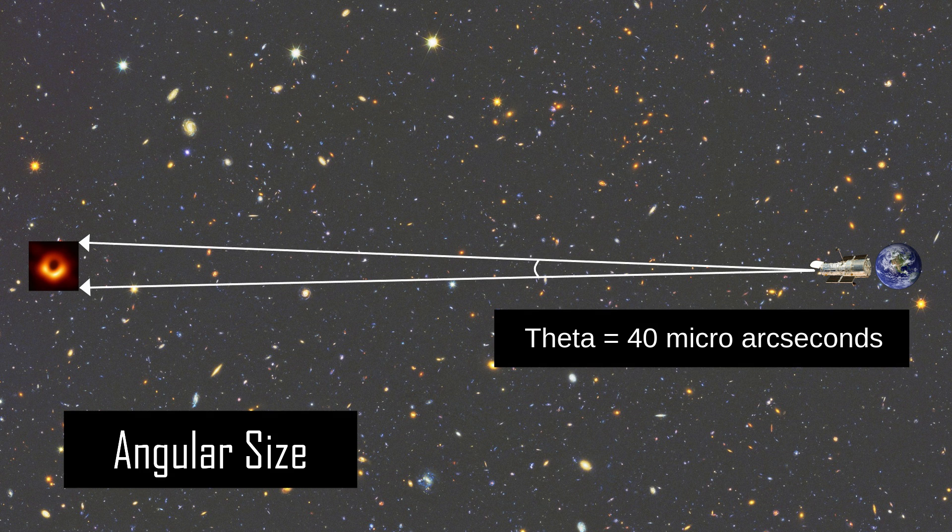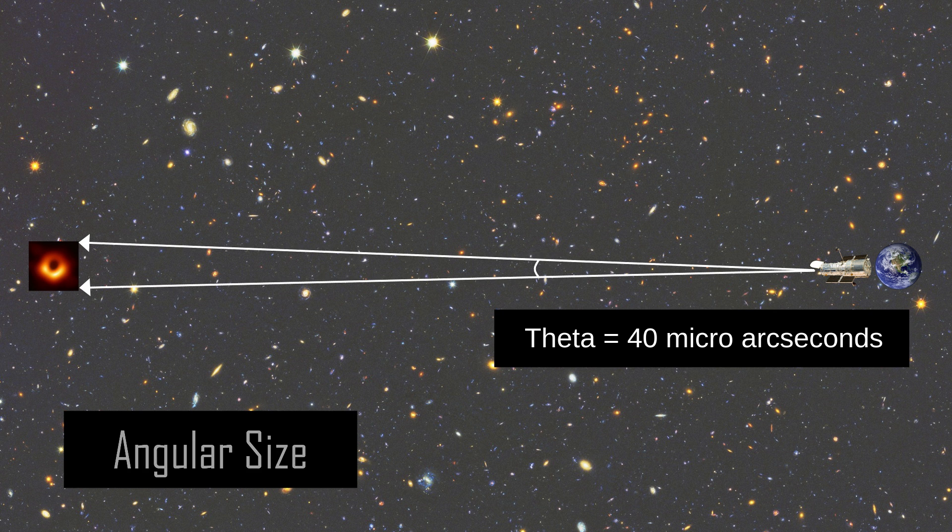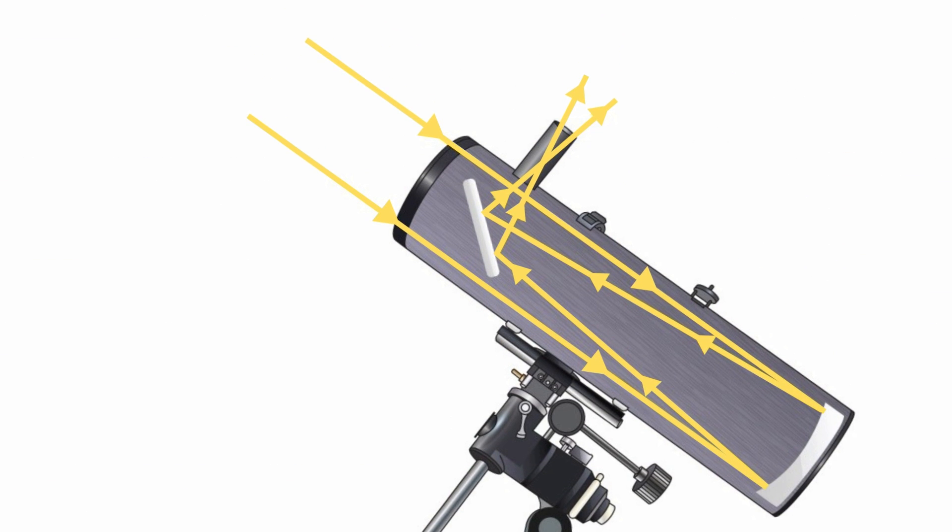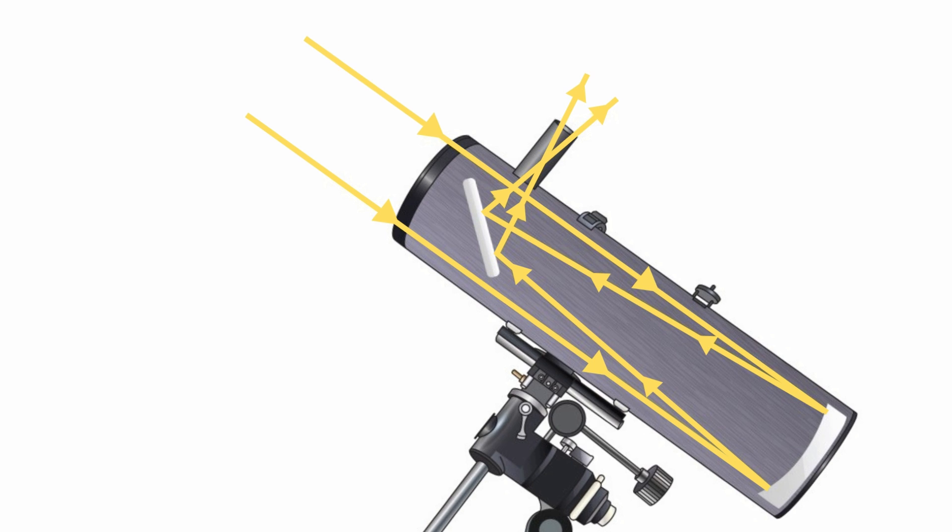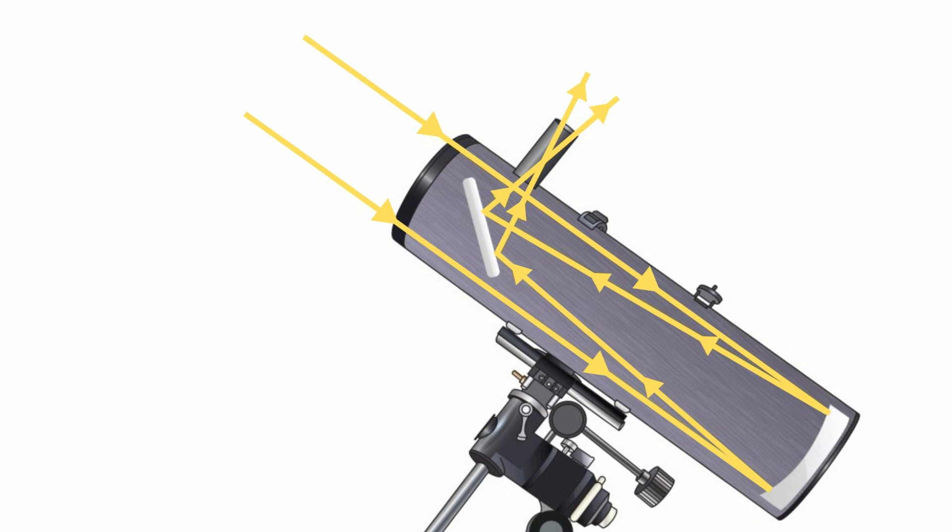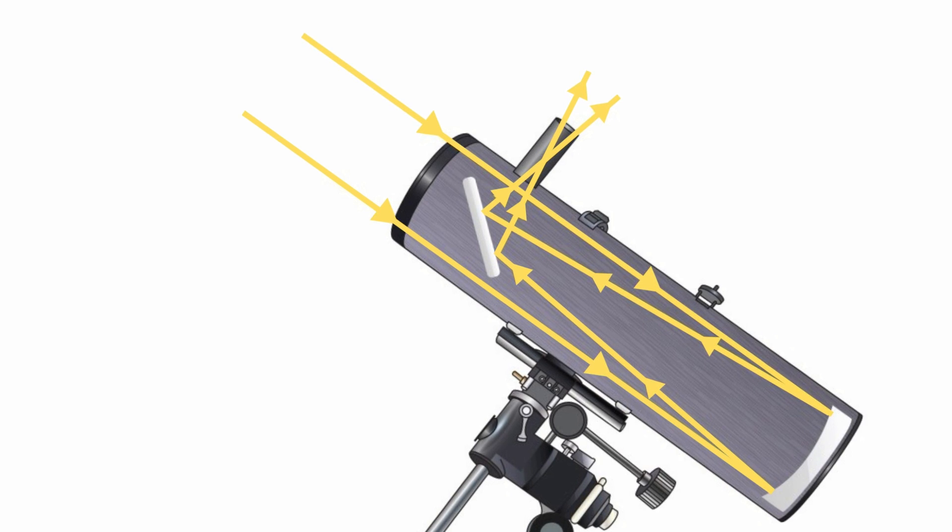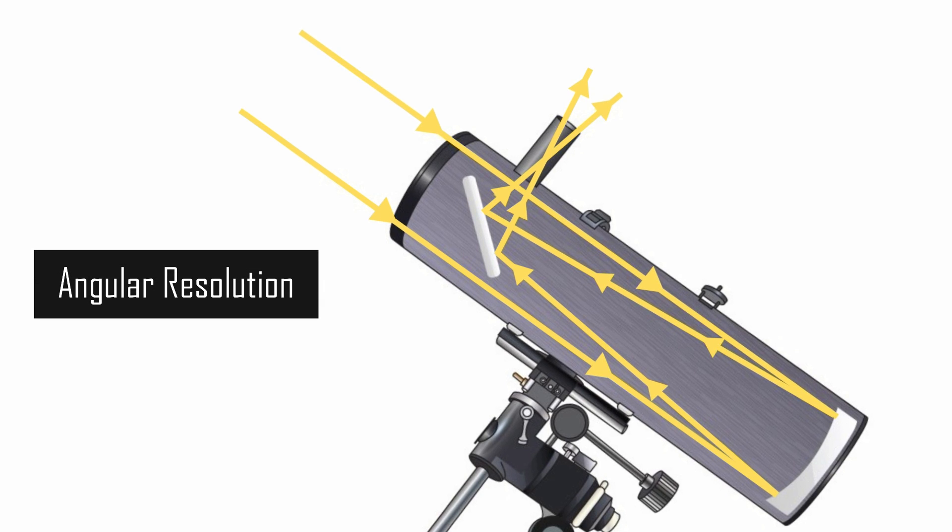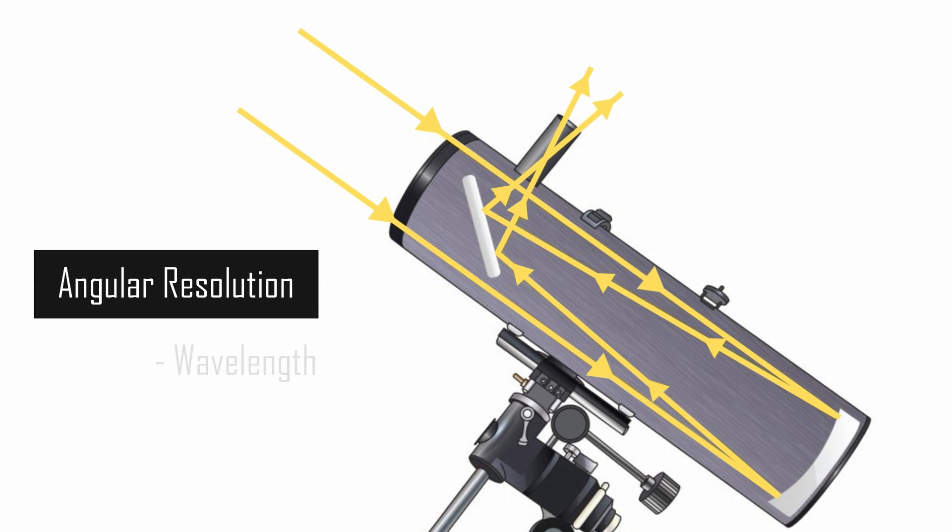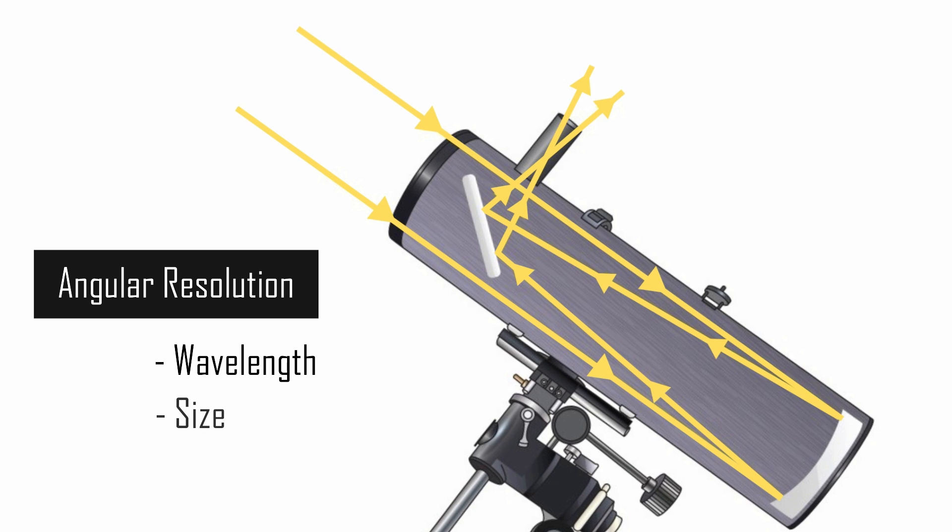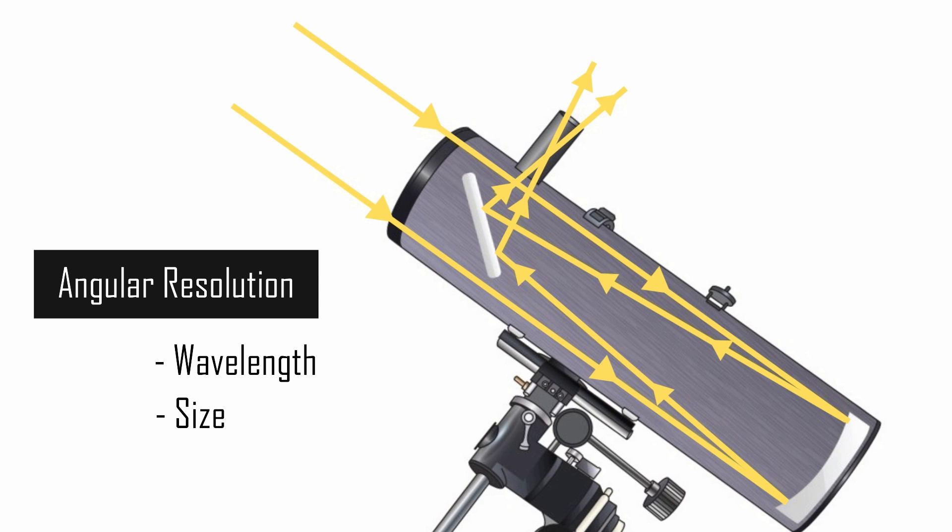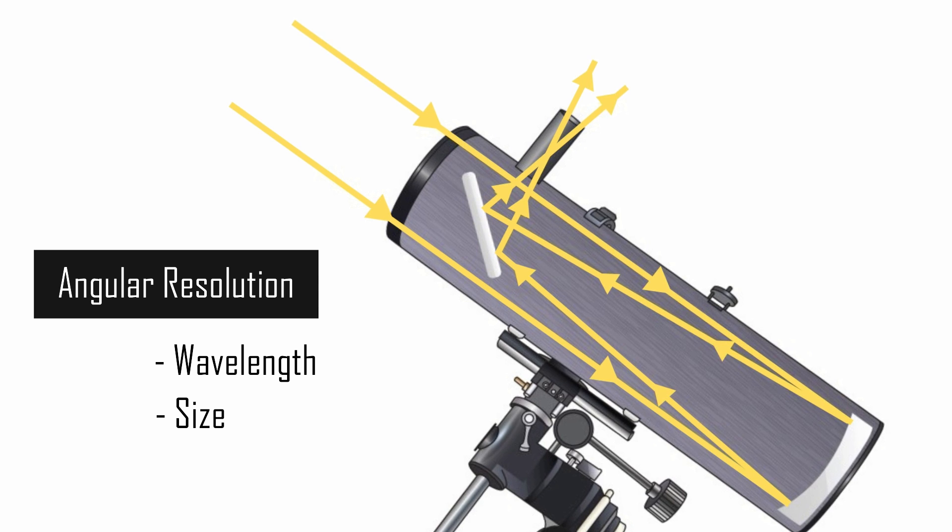This is because of diffraction. Whenever light passes through an opening of a telescope, light diffracts. It bends in a way that interferes with the rest of the light passing through the opening, thus making it difficult to resolve the object. How to overcome this? So the angular resolution of a telescope really just depends on two things: the wavelength of the light and the size of the opening of the telescope. To get a better resolution, you can either use a smaller wavelength of light or a telescope with a bigger opening or a bigger mirror size.